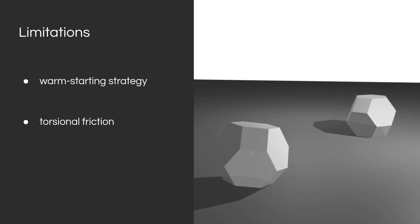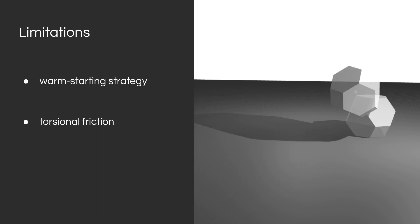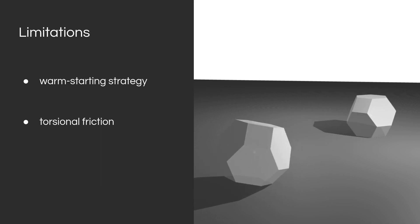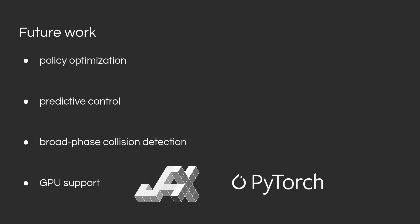The second limitation is that the method yields a single contact point between a pair of convex objects, so torsional friction is not modeled. Including torsional friction would require adding a scalar inequality constraint to the contact dynamics problem. Looking forward, we plan to leverage the differentiability of the contact formulation for policy optimization and predictive control frameworks, explore broad-phase collision detection to prune inactive collision pairs, and extend the Julia implementation to PyTorch or JAX to enable highly parallelized GPU-supported contact simulation.